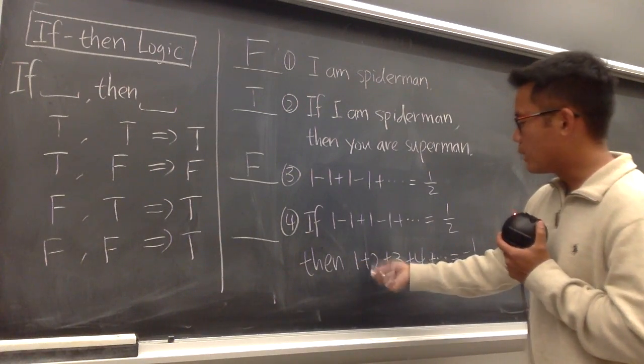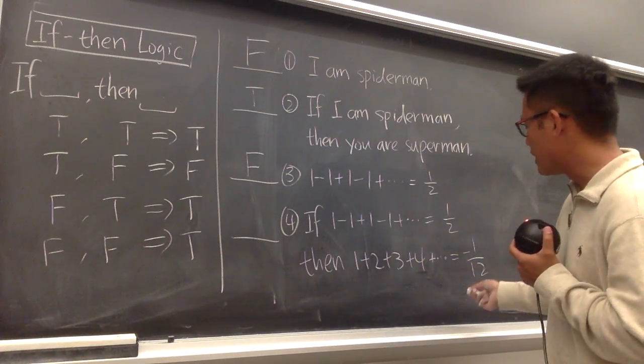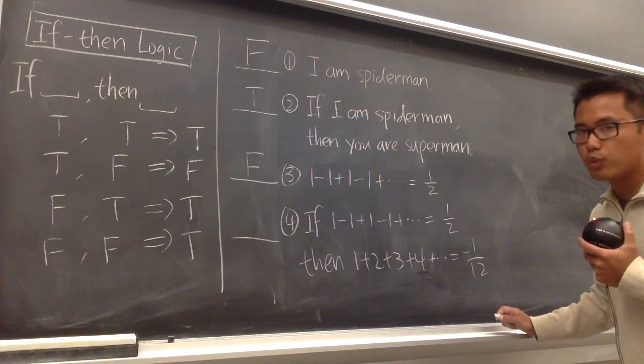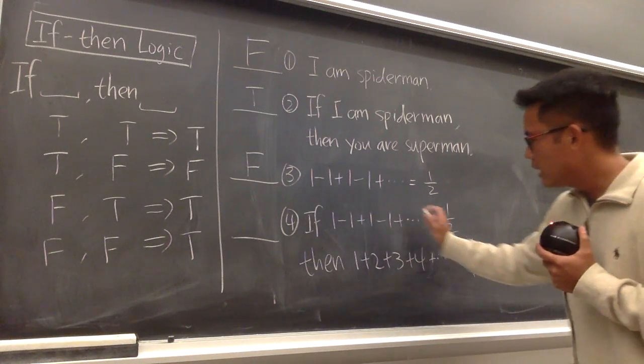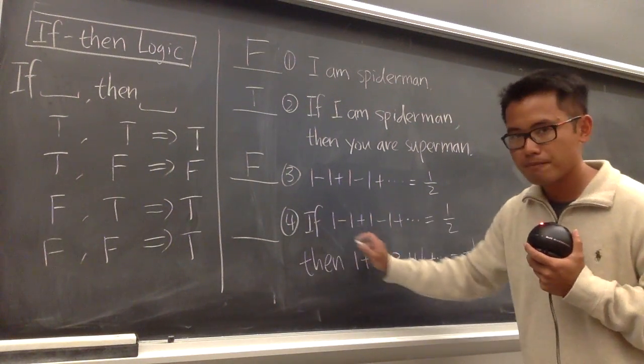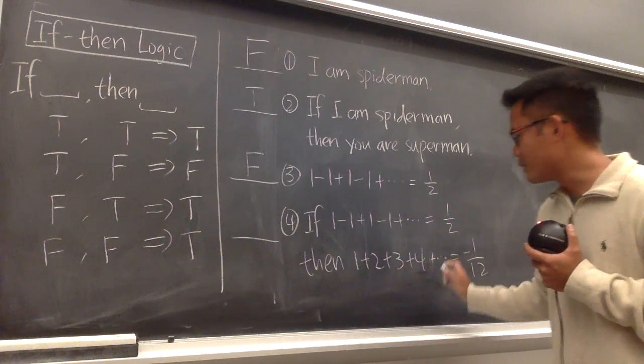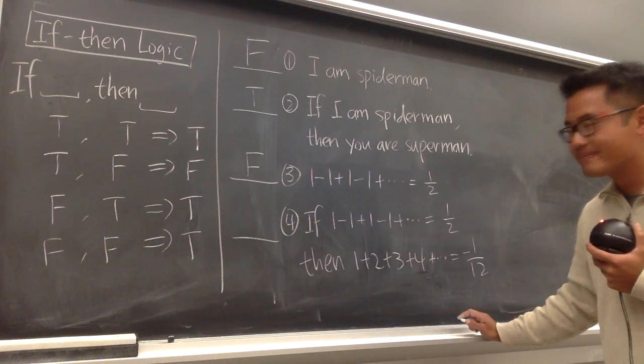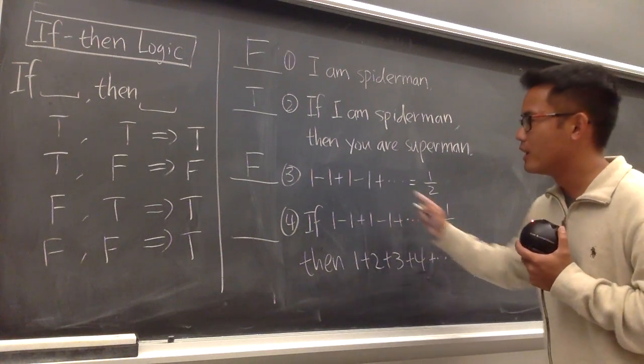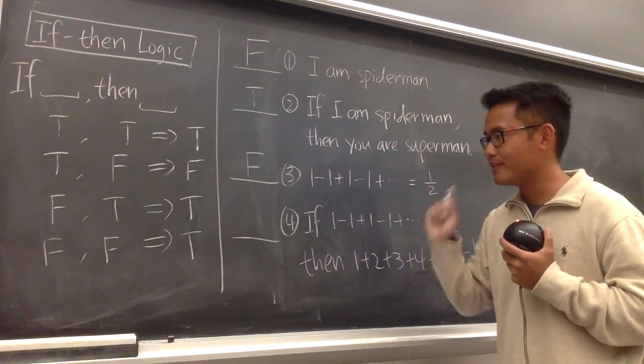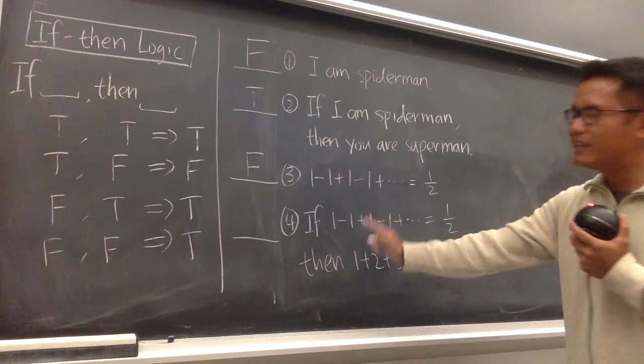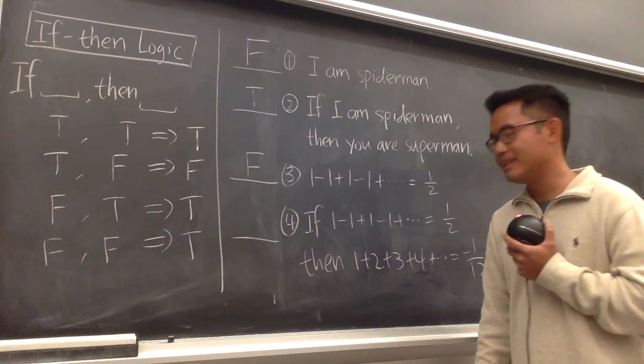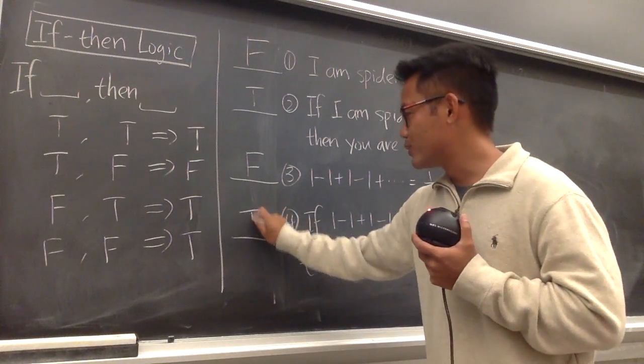equals to 1 half. Then you can say 1 plus 2 plus 3 plus 4 plus dot dot dot is equal to negative 1 over 12. Seriously, if you are willing to take this for granted, and you are trying to end up with this. You know, this part is false, by itself. But the whole thing, the whole if-then statement, is actually true.